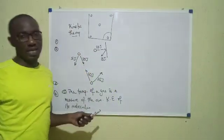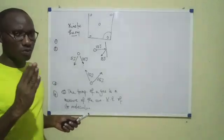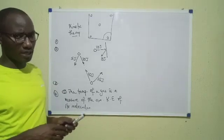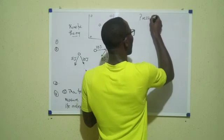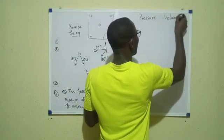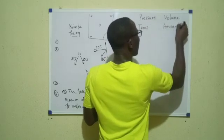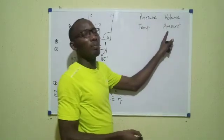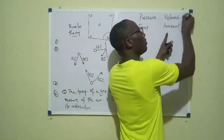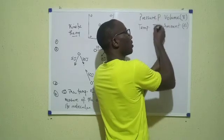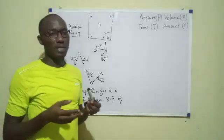Now, having stated the postulates of the kinetic theory, I'd like to talk about four parameters that we use to describe the behavior of gases. These four parameters are pressure (P), volume (V), temperature (T), and amount, which is the number of moles of gas, represented by the symbol N. So, those are the four parameters that we use to describe gases.